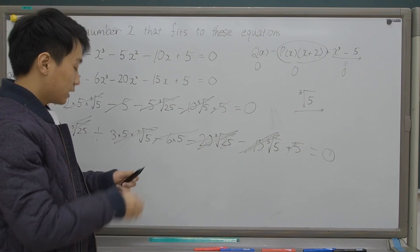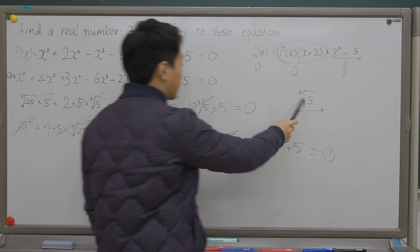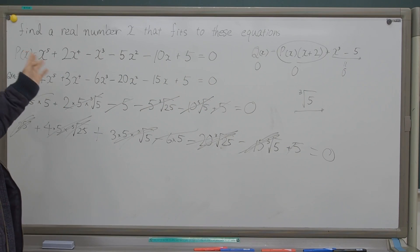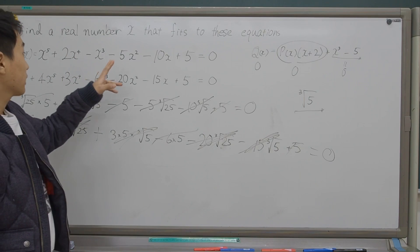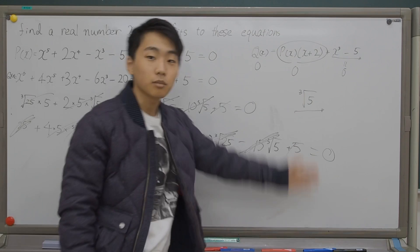So now, this means that the cube root of 5 is - find a real number x that fits through these equations. So the answer is cube root of 5.